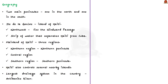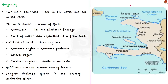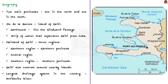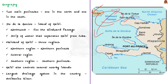Haiti is shaped like a horseshoe on its side, with two main peninsulas — one in the north and one in the south. Between the peninsulas lies Gonâve Island, which belongs to Haiti. To the northwest of the northern peninsula lies the Windward Passage, a strip of water that separates Haiti from Cuba and connects the Caribbean Sea with the Atlantic Ocean.